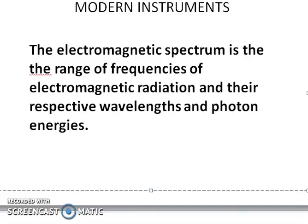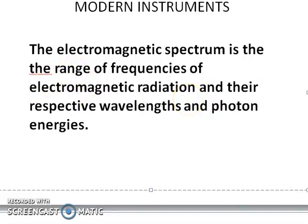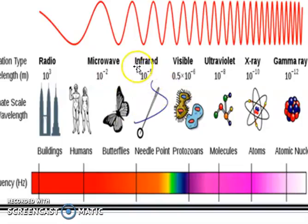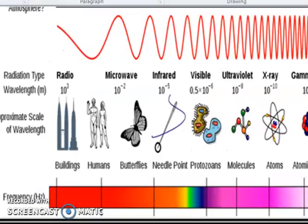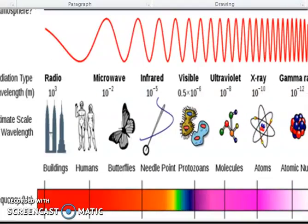In the modern instruments, we have the Electromagnetic Spectrum. What is the Electromagnetic Spectrum? It is the range of frequency of electromagnetic radiation and their respective wavelength and photon energy. This is the Electromagnetic Spectrum. This is the figure of the Electromagnetic Spectrum.